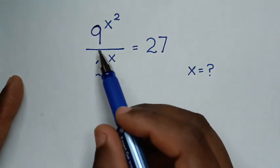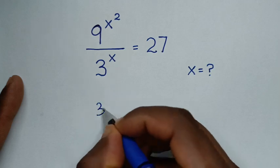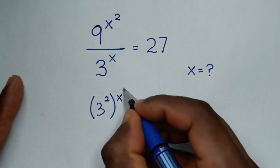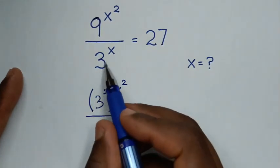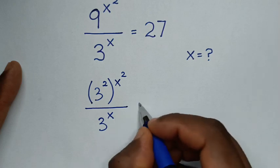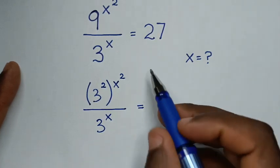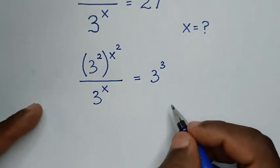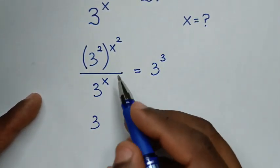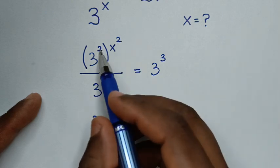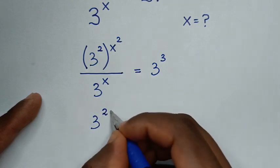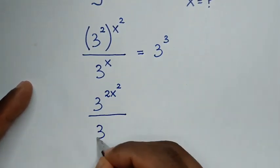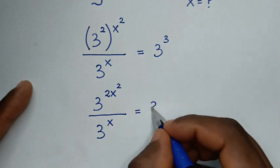In the first step, 9 is the same as 3 squared, so we have 3 squared to the power of x squared, over 3 to the power of x. On the right side, 27 is equal to 3 to the power of 3. Multiplying the exponents gives us 3 to the power of 2x squared over 3 to the power of x, equal to 3 to the power of 3.